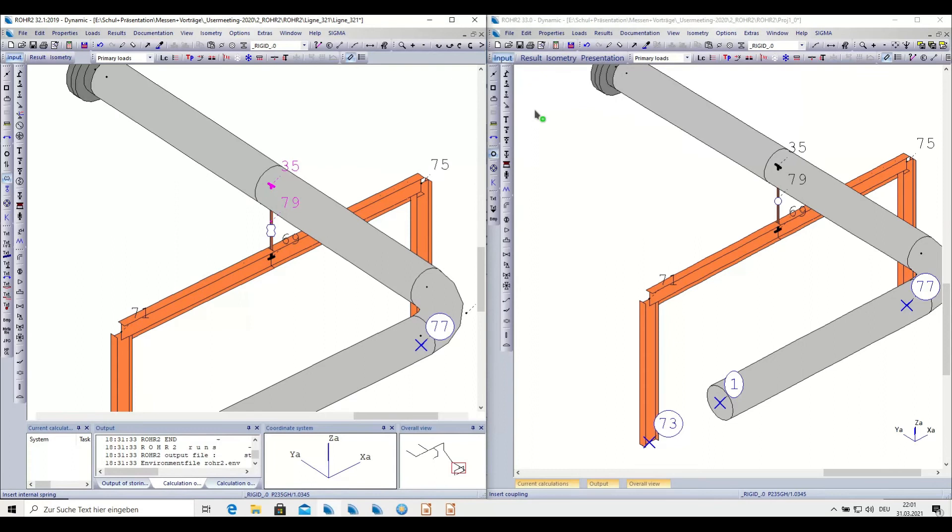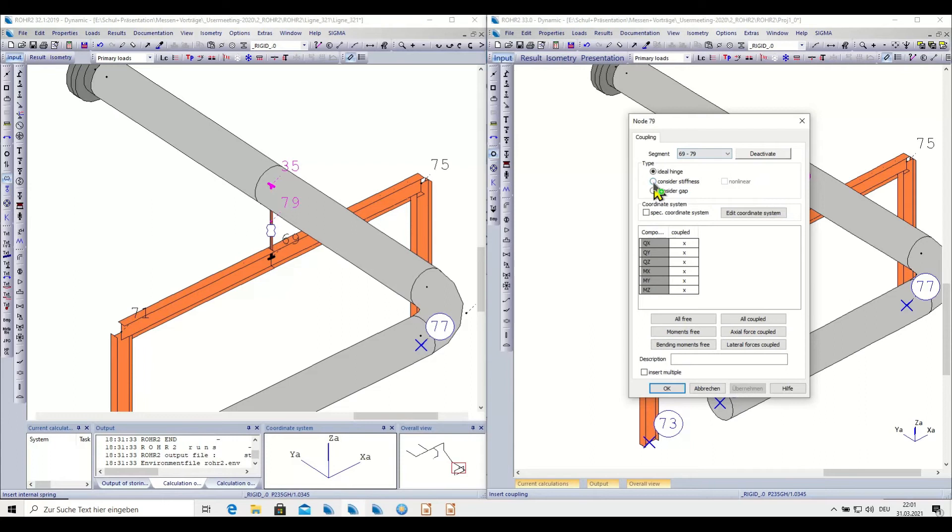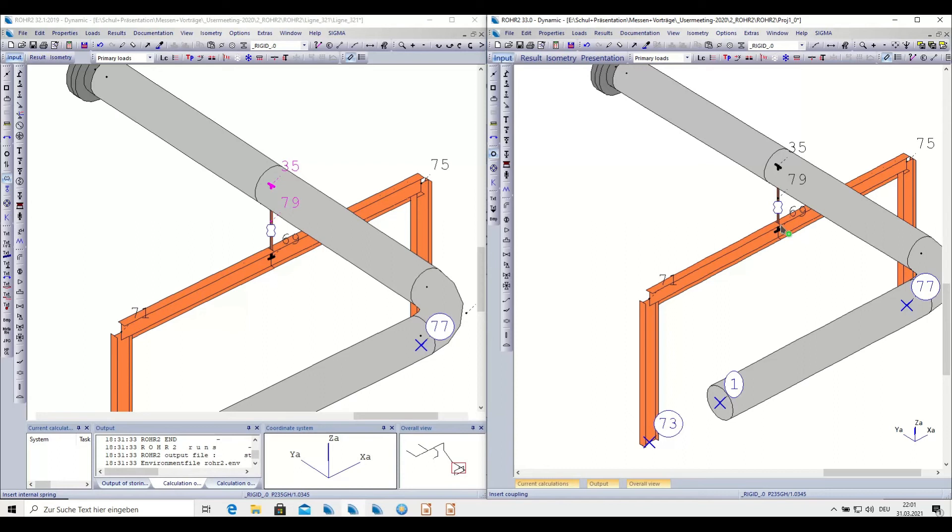33.0. I take the hinge function and now say consider stiffness, and specify the stiffness which I want to enter here—2000. OK. And you can see that the symbol has automatically changed.